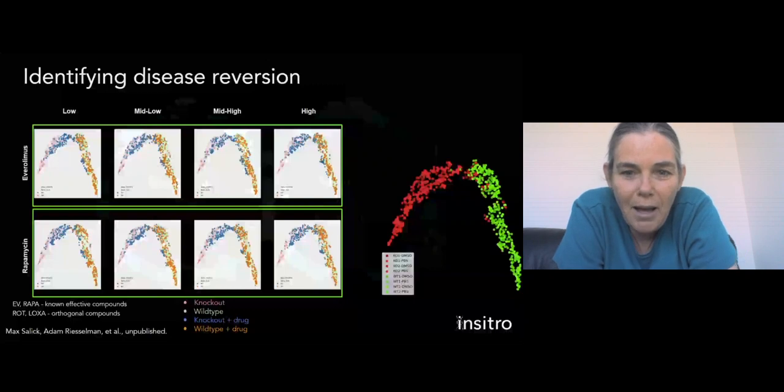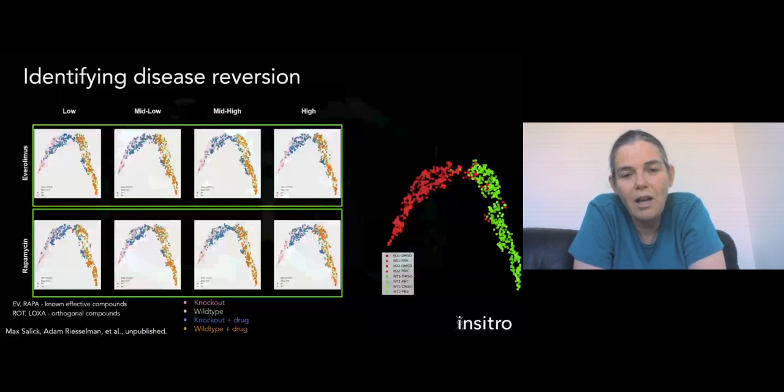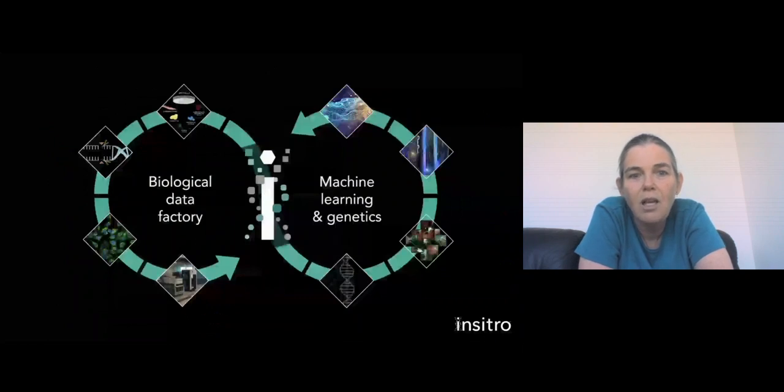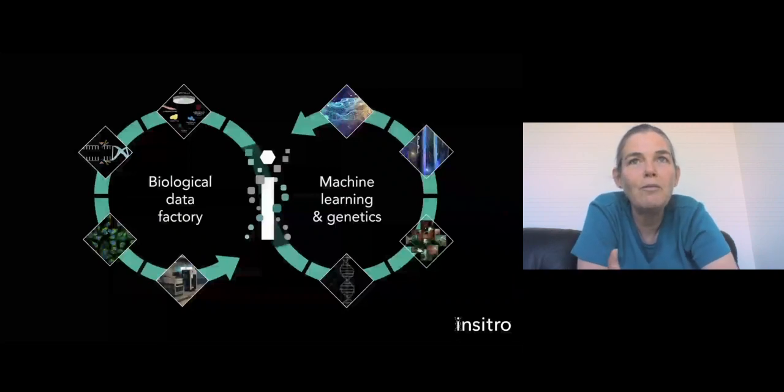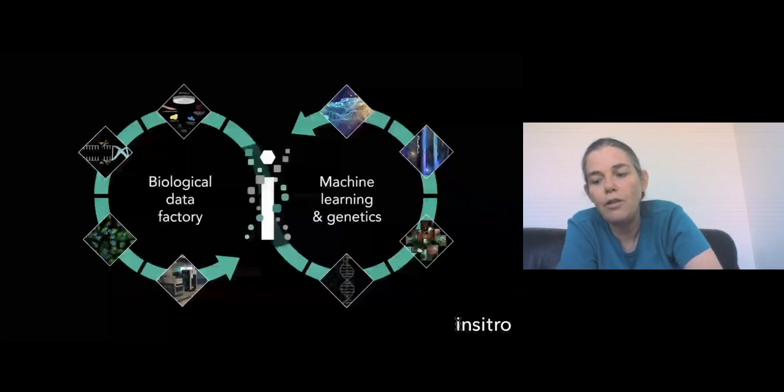So taking a big step back and reminding ourselves of what we're doing here. What we're building here is a company that really tries to bring together two worlds into a single integrated whole. We're building on the one side a biological data factory that manufactures data at unprecedented scales by combining a range of tools that have each been developed quite recently, but together able to create massive amounts of disease-relevant data, which can then feed into machine learning models that allow those data to be interpreted and the effects of interventions that may impact human health to be identified.